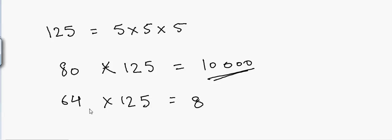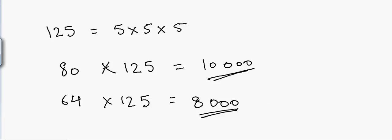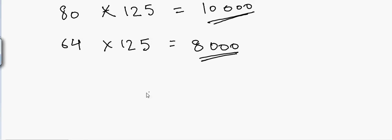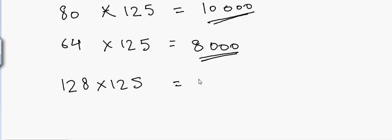So 64 × 125 = 8000. Another example: 128 × 125 — we know 128 divided by 8 is 16, then put three zeros at the end, giving 16000. Now let's move on to multiplication by 15.